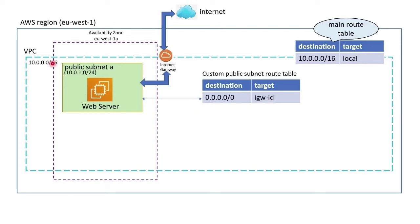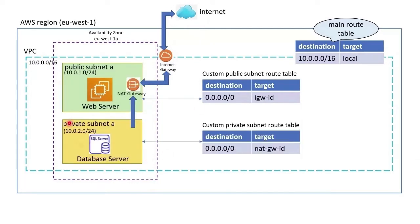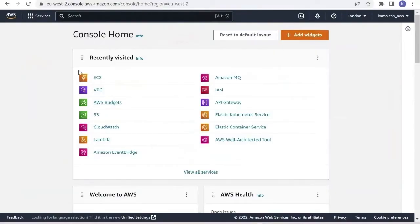Hello guys, welcome to my channel. This video is in continuation to the last video where I had created a VPC, a public subnet, and a route to an internet gateway. In this demo we will be creating a private subnet and a NAT gateway in the public subnet, and a route table pointing to the NAT gateway.